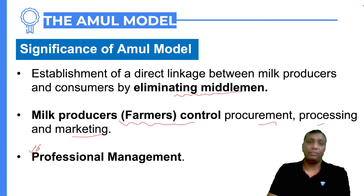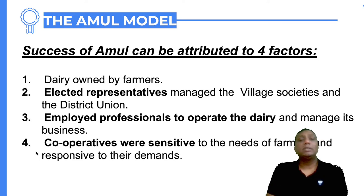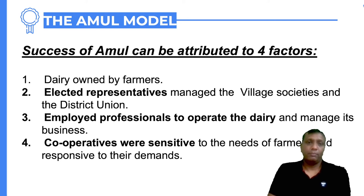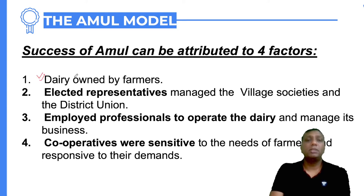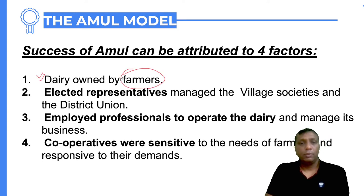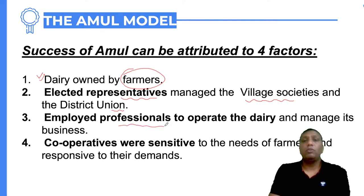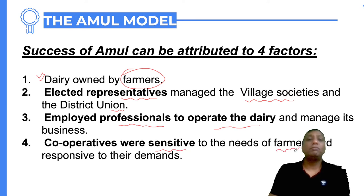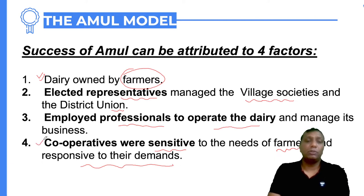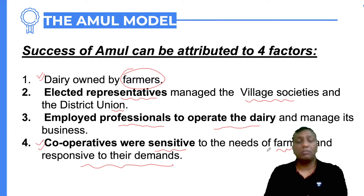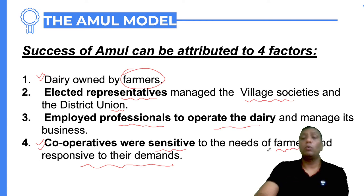The success of Amul can be attributed to four factors: first, the dairy is owned by farmers, so farmers regulate their own dairies; second, elected representatives manage the village societies and district unions; third, professional people are employed to operate the dairies; and fourth, the cooperative is sensitive to farmers' emotions and responds to their demands. This is why farmers have more and more confidence in the cooperatives.